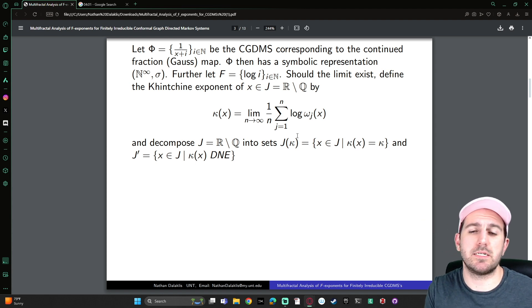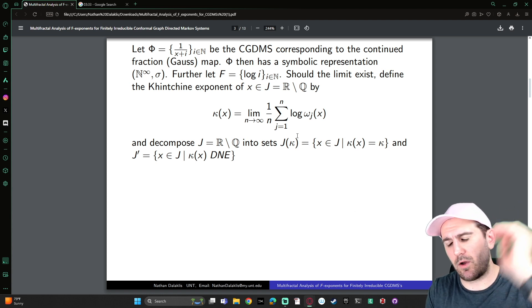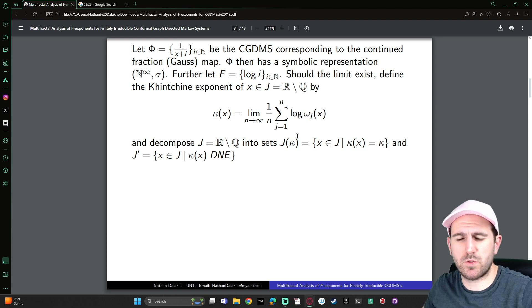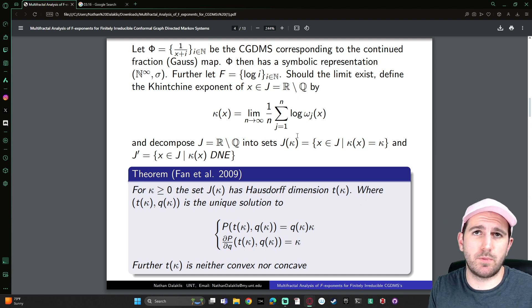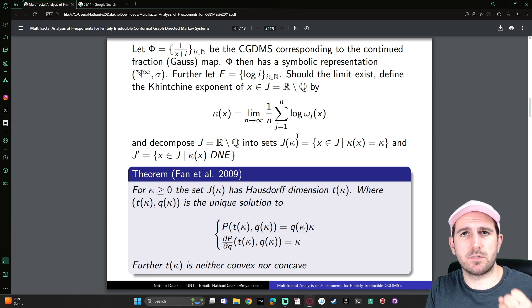When we do this, we're going to decompose the limit set, which is the irrationals, into the sets of irrationals that attain a particular Khinchin exponent. Now, this is a really nice situation because our coding map, or our map that projects us from our symbolic representation down onto our limit set of the irrationals, in this case, is one-to-one and onto. So we only have this decomposition. And there's this theorem from Vaughn and their collaborators, where they actually go ahead and compute the Hausdorff dimension of each of these components of the irrationals that attain a particular Khinchin exponent. So it's found by solving the system of equations, and you get this T function out, or the spectrum function out from that pair of solutions that spits out the Hausdorff dimension.